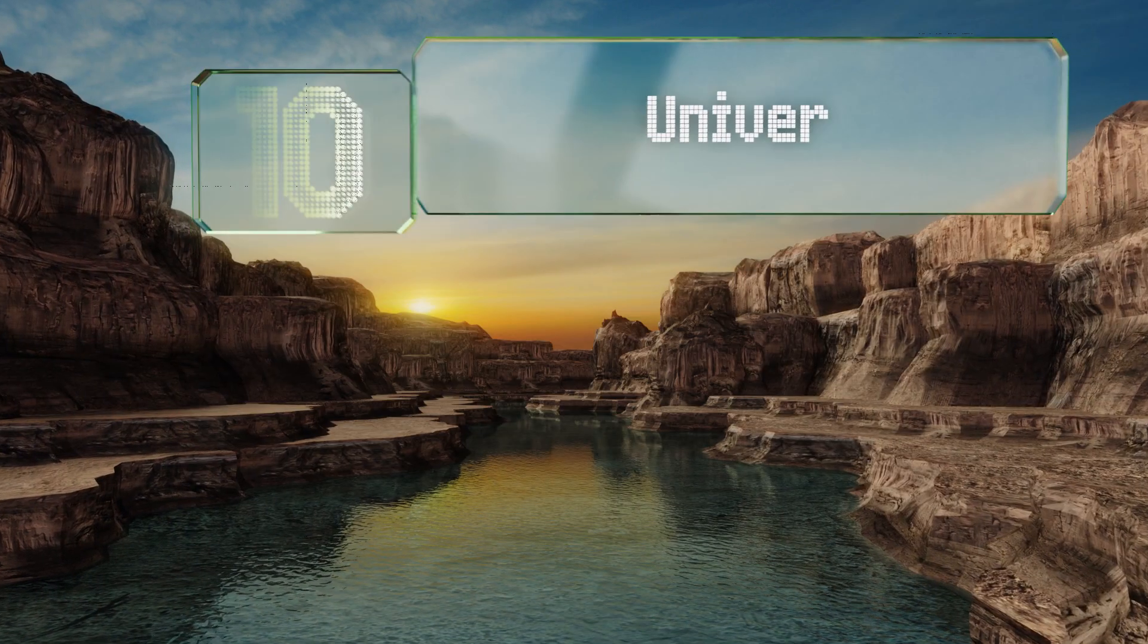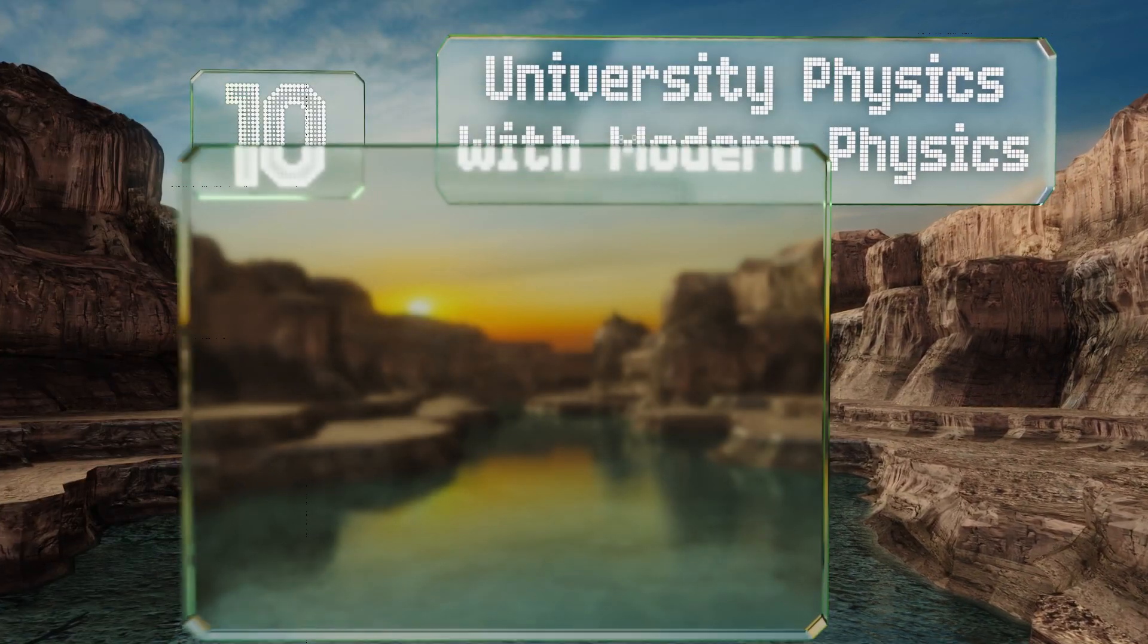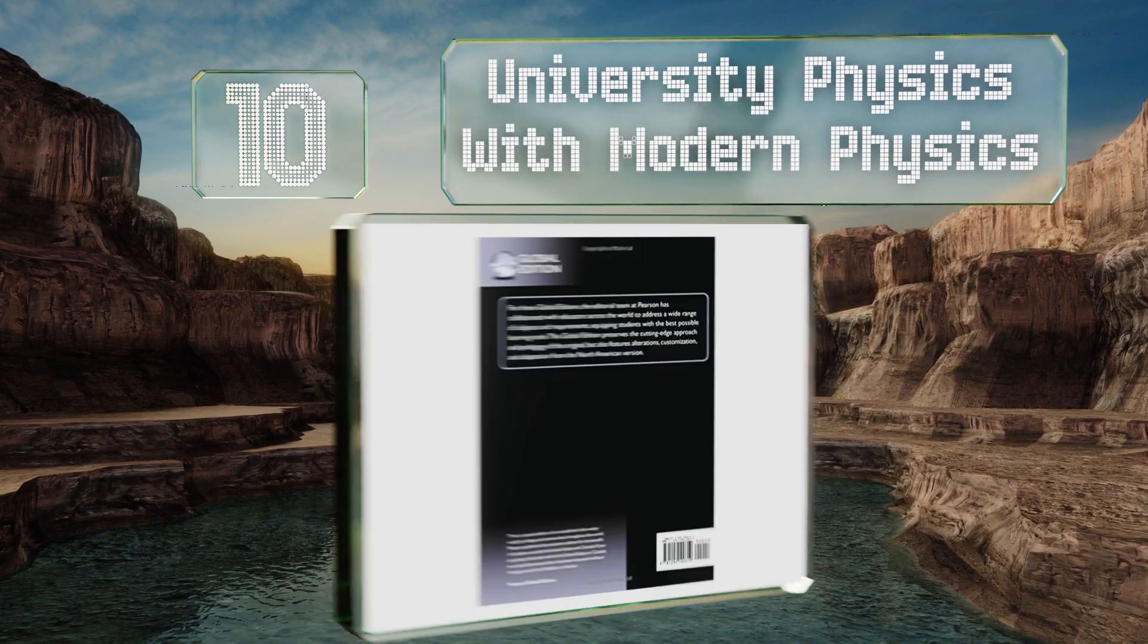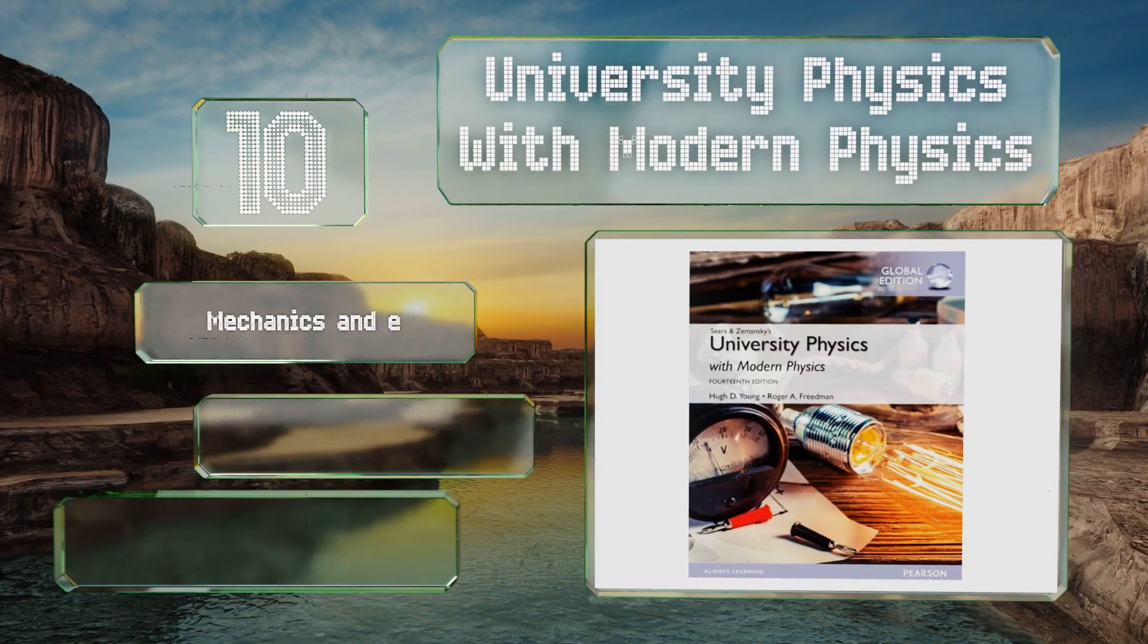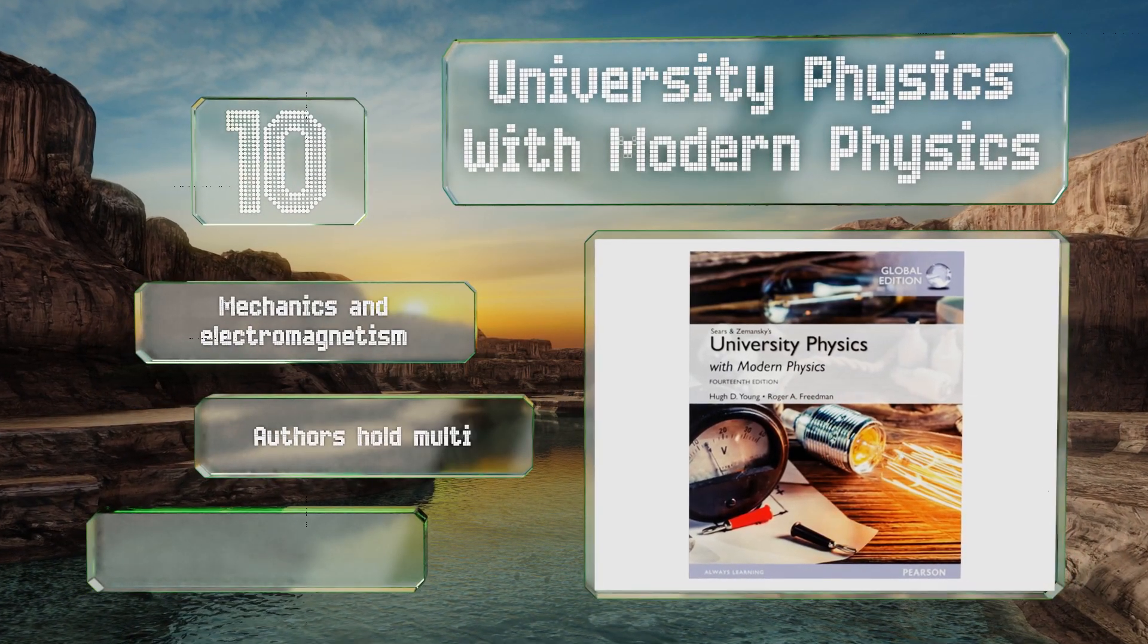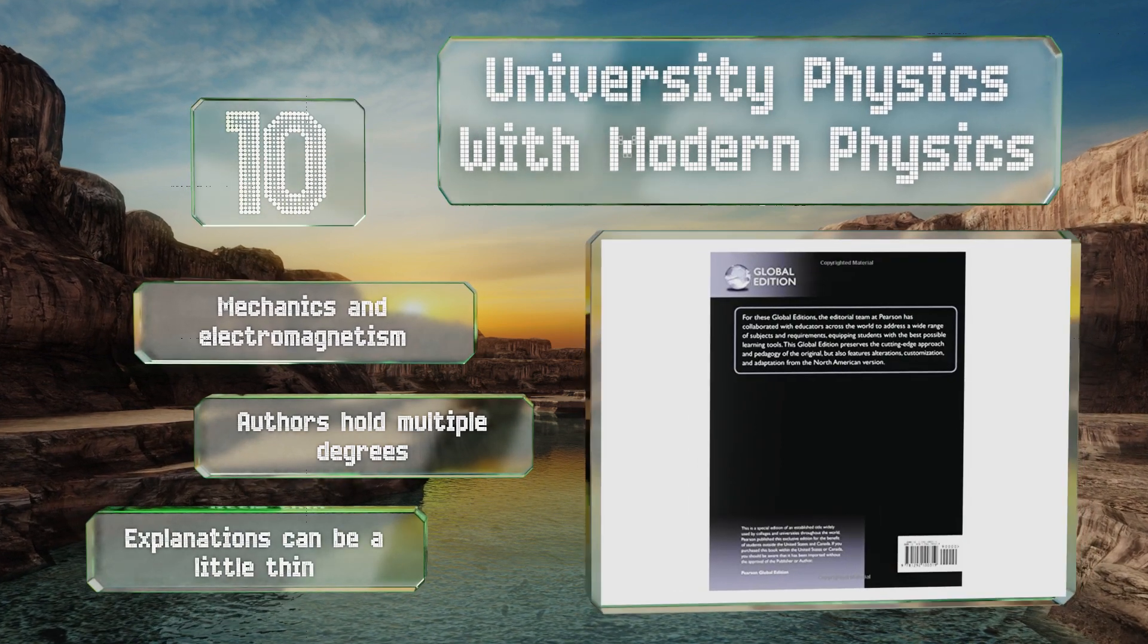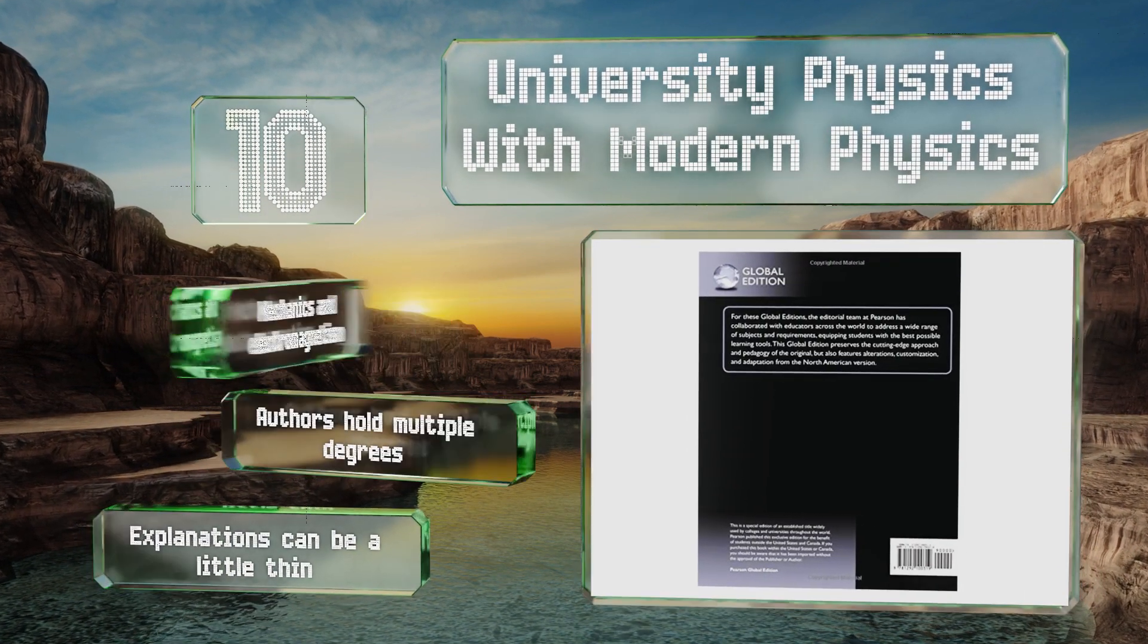Starting off our list at number 10, University Physics with Modern Physics by Hugh Young and Roger Friedman is currently on its 14th edition, so clearly there's much merit to this volume. It is a bit expensive, but it's intended only for the student actively pursuing advanced studies in the field. It covers mechanics and electromagnetism, and the authors hold multiple degrees. However, some of the explanations can be a little thin.